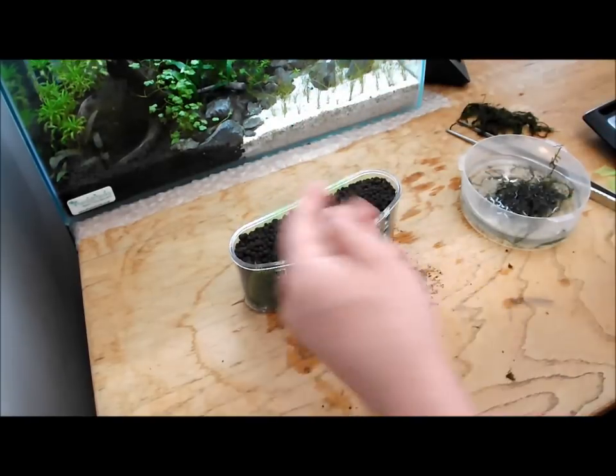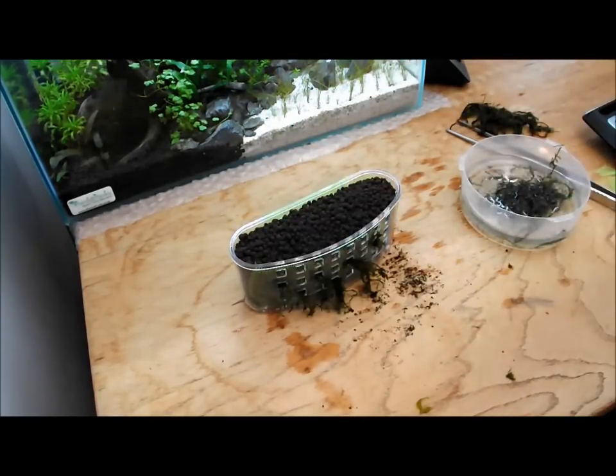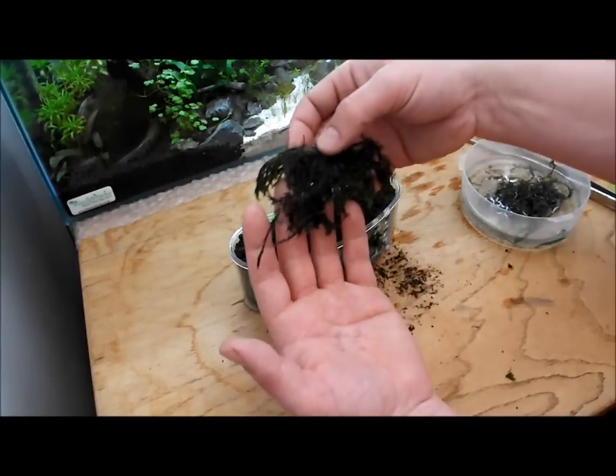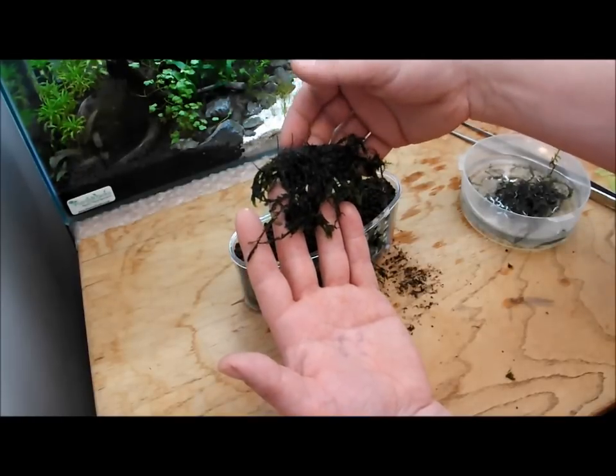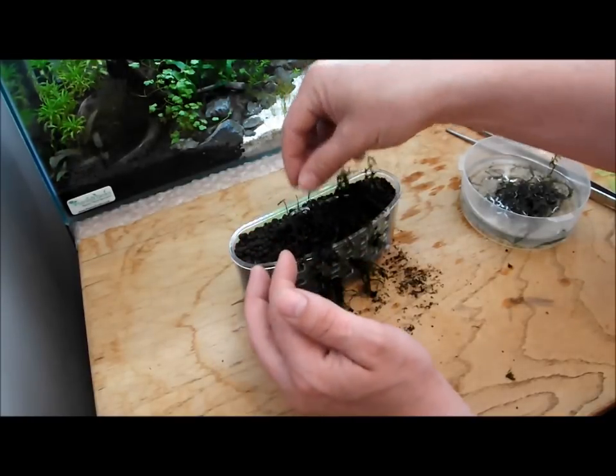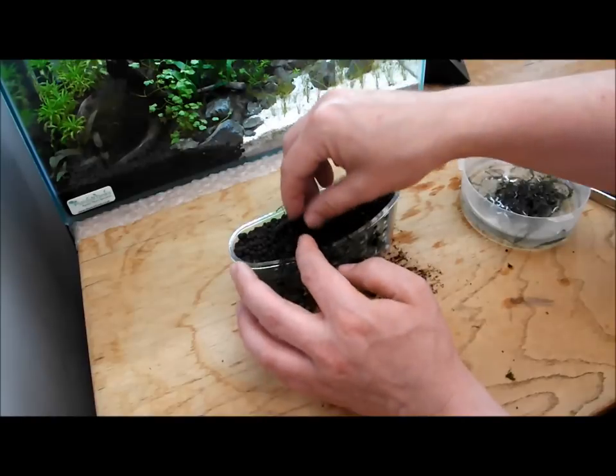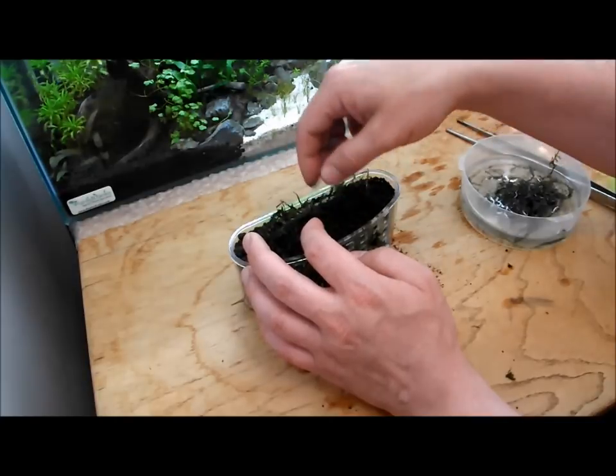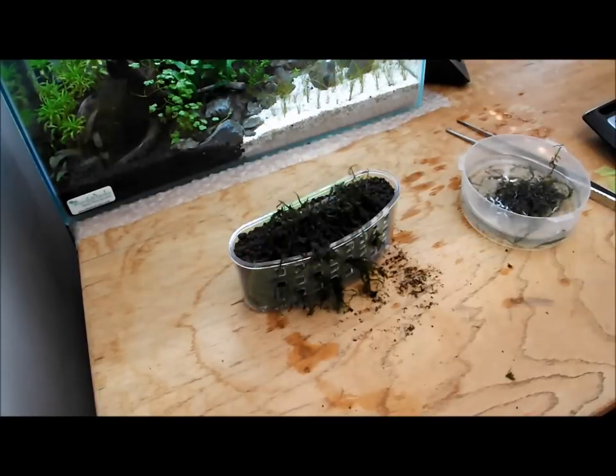So once you've done that obviously you're going to want to use your plants from the top. I don't have a fantastic amount but I've got some willow moss which is on a slate. I'm actually just going to put the slate on there, like so. Remember you can use anything you want.